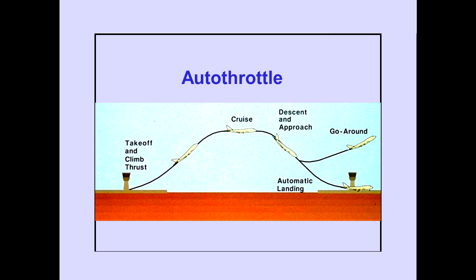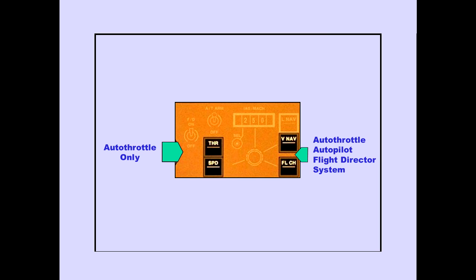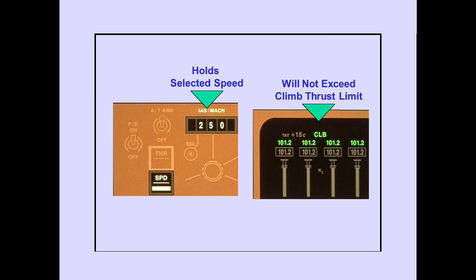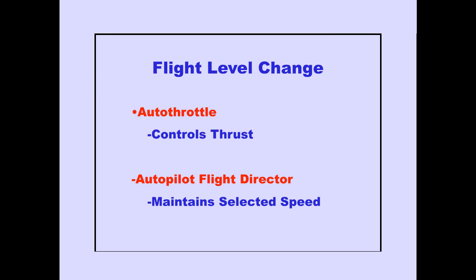Let's review our discussion of the autothrottle. The autothrottle is a full-time system which can be operated from the start of the takeoff roll through an automatic landing or go-around. The thrust and speed switches affect only the autothrottle. The VNAV and flight level change switches affect the autothrottle and autopilot flight director pitch control. When thrust is selected, the autothrottle holds the selected climb thrust. In the speed mode, the autothrottle holds the speed set in the IAS mach window but will not exceed the thrust limit of the selected thrust mode. In the flight level change mode, the autothrottle controls thrust for automatic climbs and descents, while the autopilot flight director pitch maintains the selected speed set in the IAS mach window.